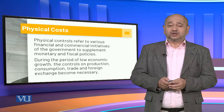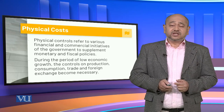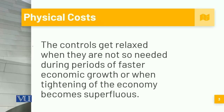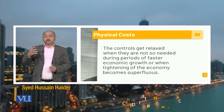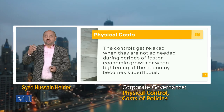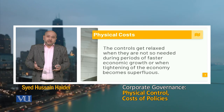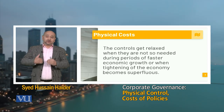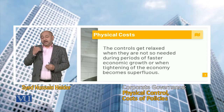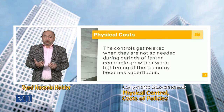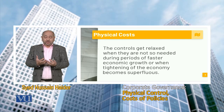All of these become extremely important in the government context, so the government has to intervene both positively and negatively. Controls get relaxed when they are not so needed during periods of faster economic growth. The government would ease controls and let the economy go at its own pace because there are more returns, more cash flow, more employment, higher per capita income, a higher GDP, and a better balance of payments. When everything is going well, there's no need for government intervention and it tends to minimize.